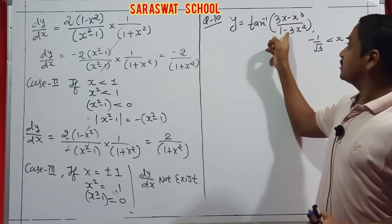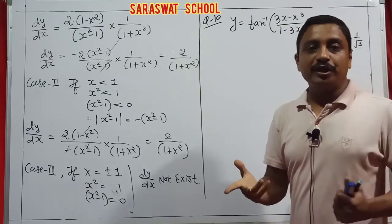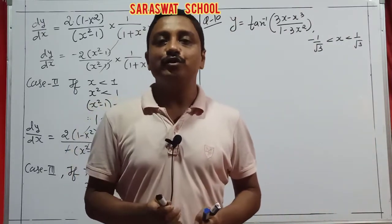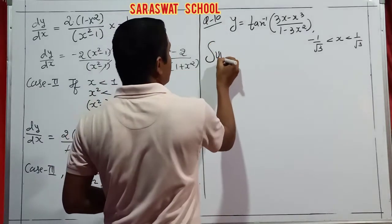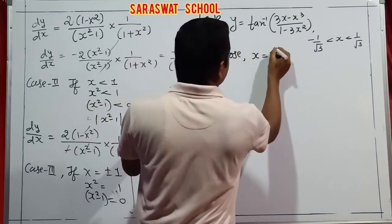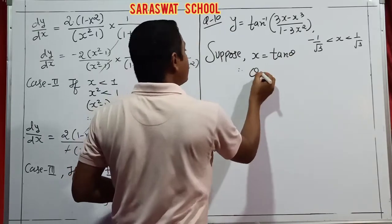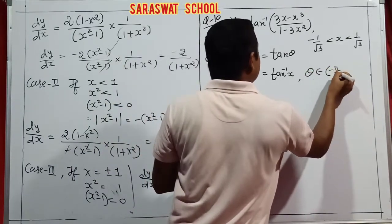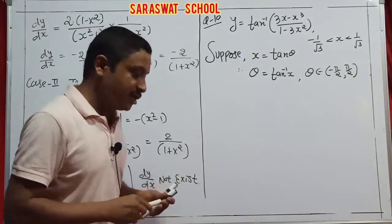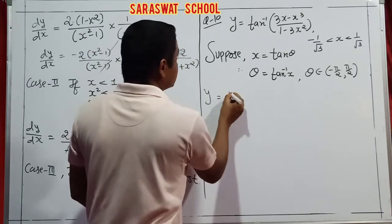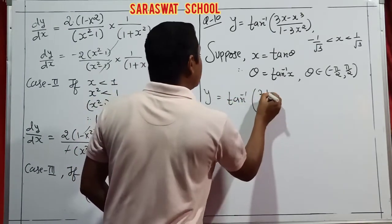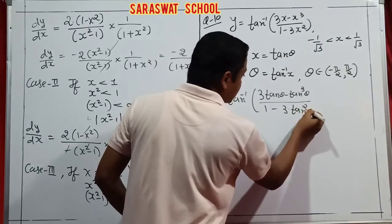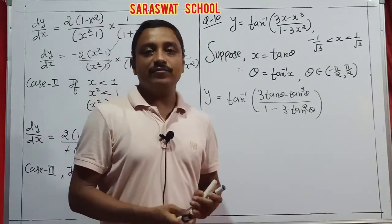Now question 10: y = tan⁻¹((3x-x³)/(1-3x²)). I hope you know this is the tan 3θ formula. And students, a condition is given: -1/√3 < x < 1/√3. This means I go suggestion-wise. Suppose x = tan θ, so θ = tan⁻¹x, and θ belongs to the range (-π/2, π/2). So y = tan⁻¹((tan θ - tan³θ)/(1 - 3tan²θ)), and this formula is tan 3θ.